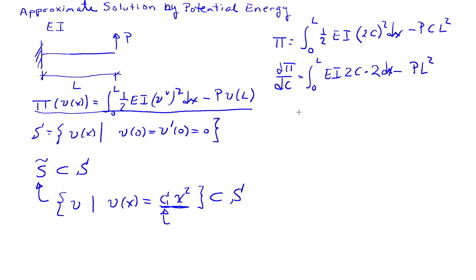Doing this integral, everything is constant, so we get 4CEIL minus PL squared. For equilibrium, this equals 0, so C equals PL squared divided by 4EIL, which simplifies to PL over 4EI.